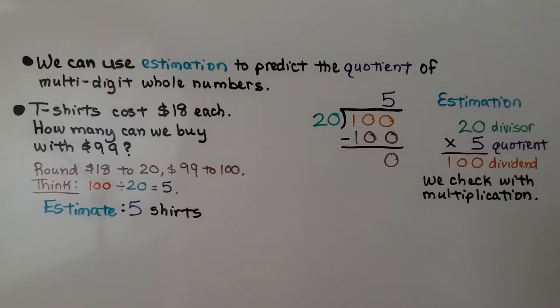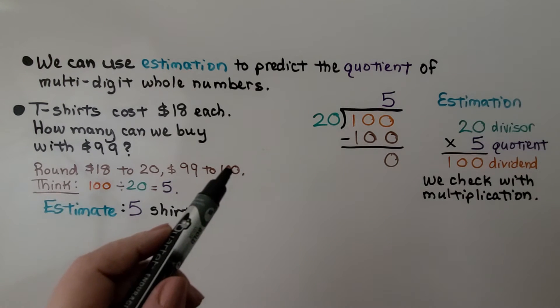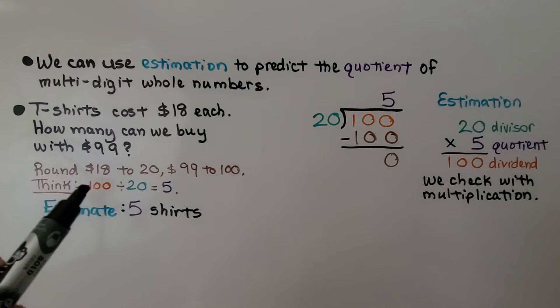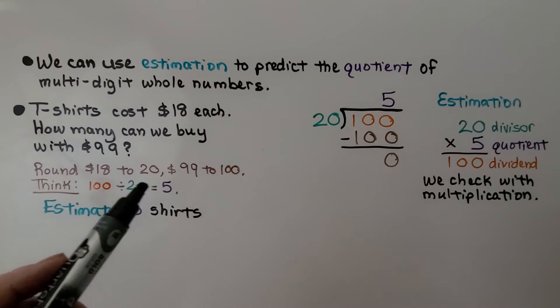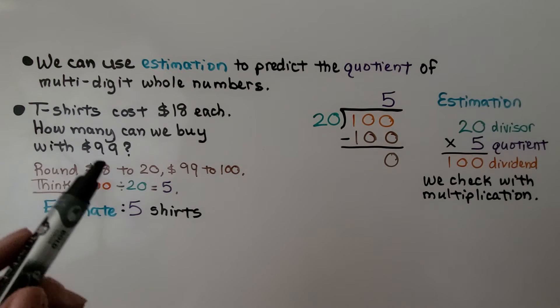We can use estimation to predict the quotient of a multi-digit whole number. If we see a problem that says t-shirts cost $18 each, how many can we buy with $99? We round the 18 to 20, we round the 99 to 100, and we think, how many 20s are in 100? 100 divided by 20 is equal to 5. That means we can estimate that we can buy 5 shirts. So we can get about 5 shirts with that $99.